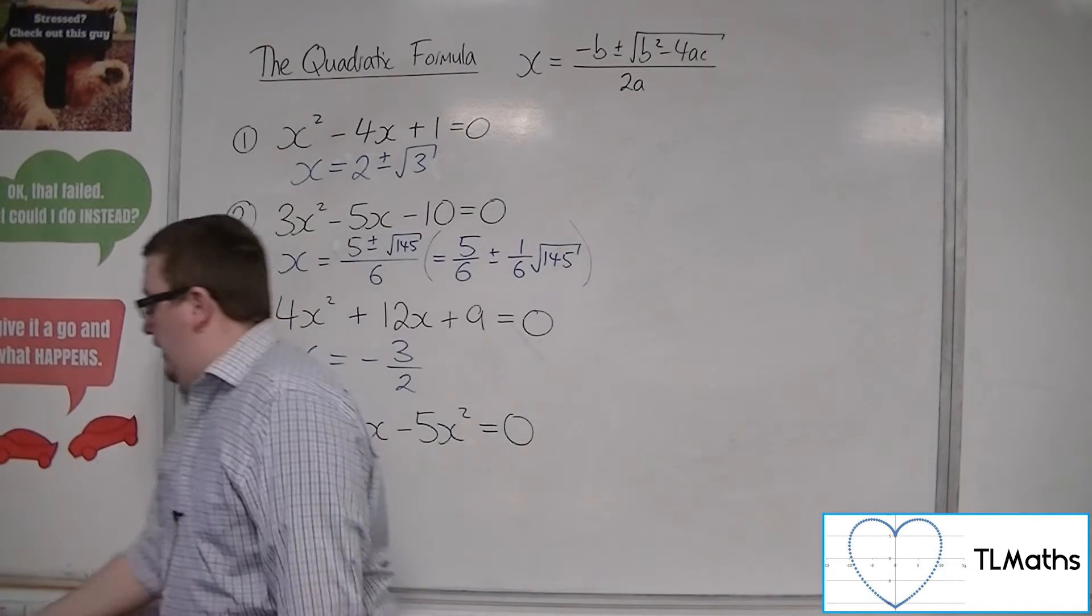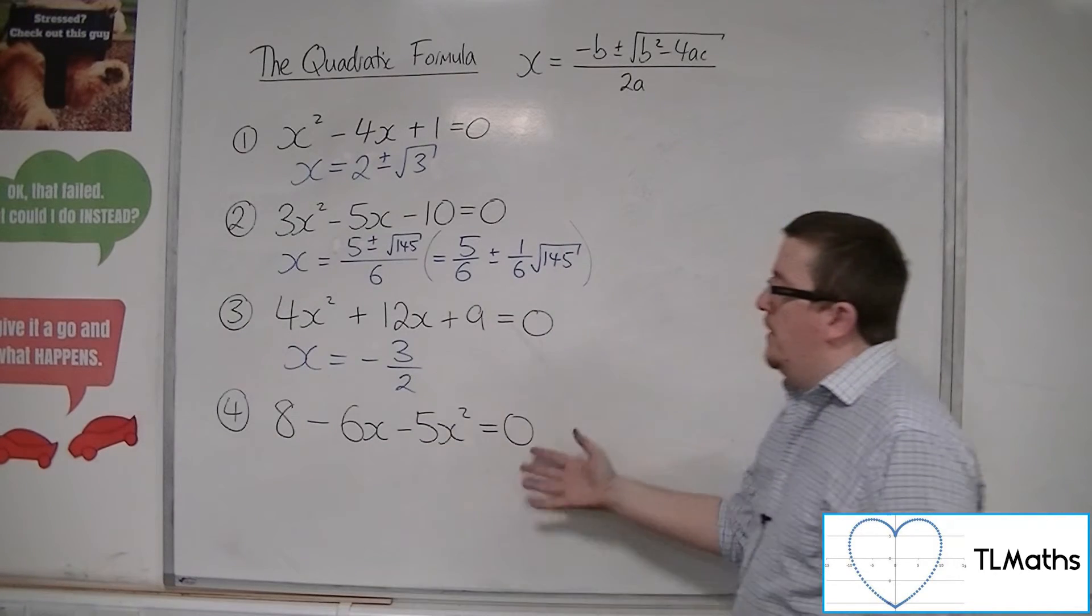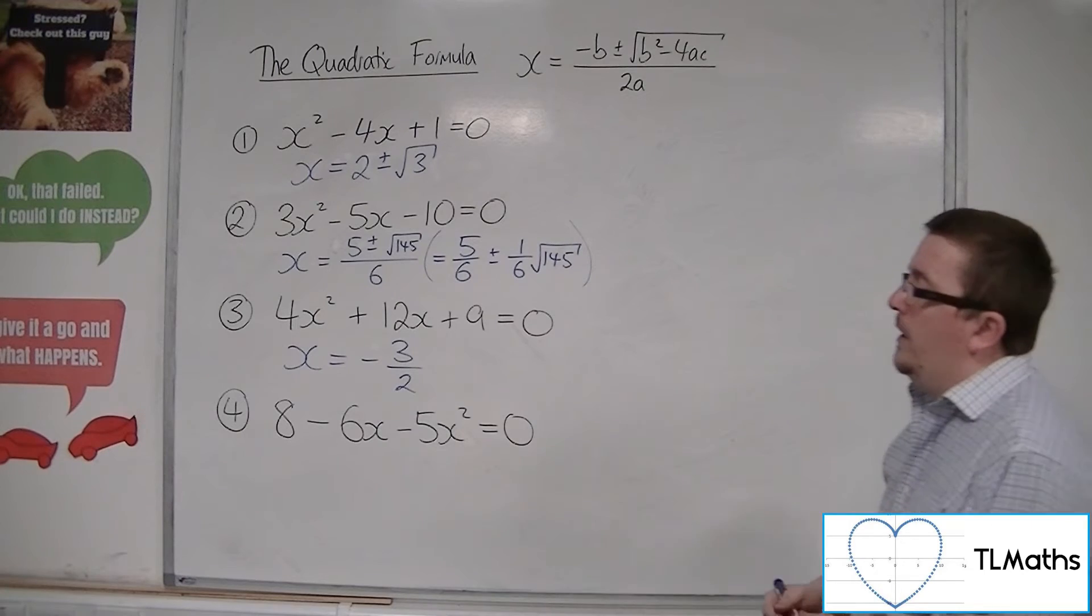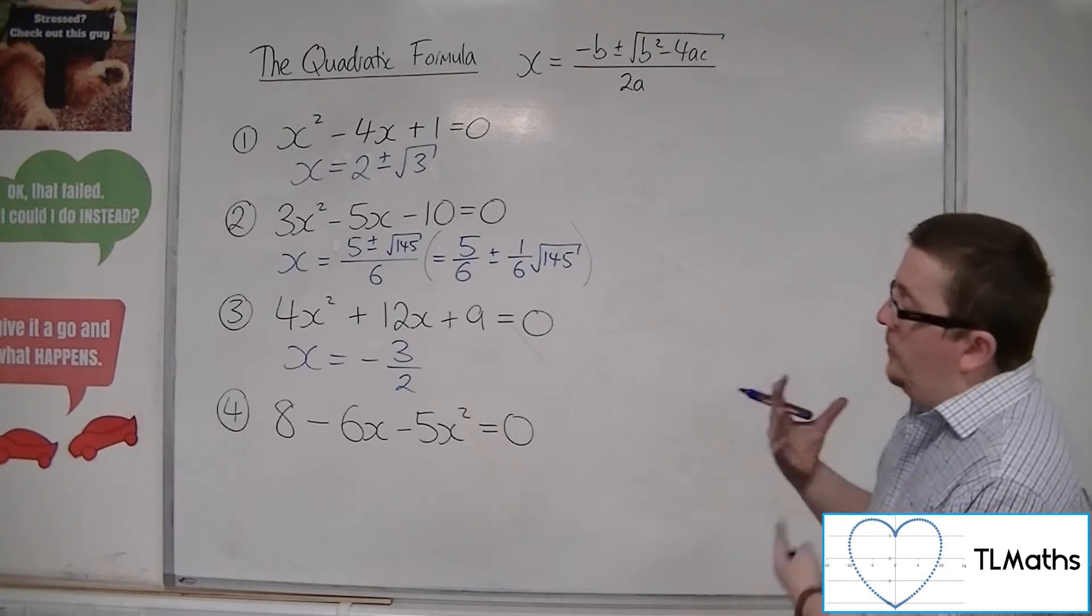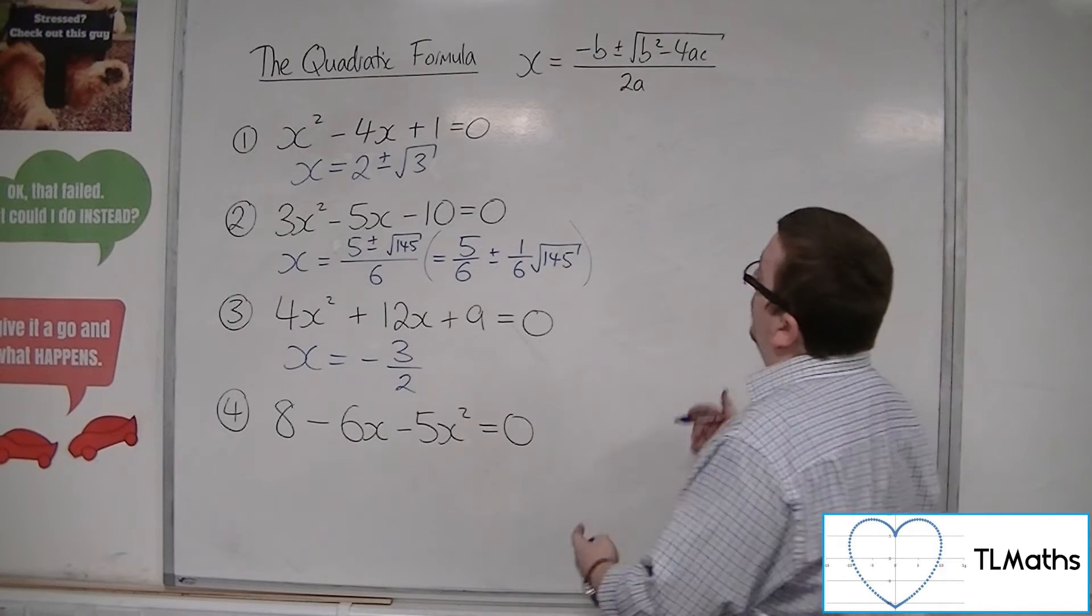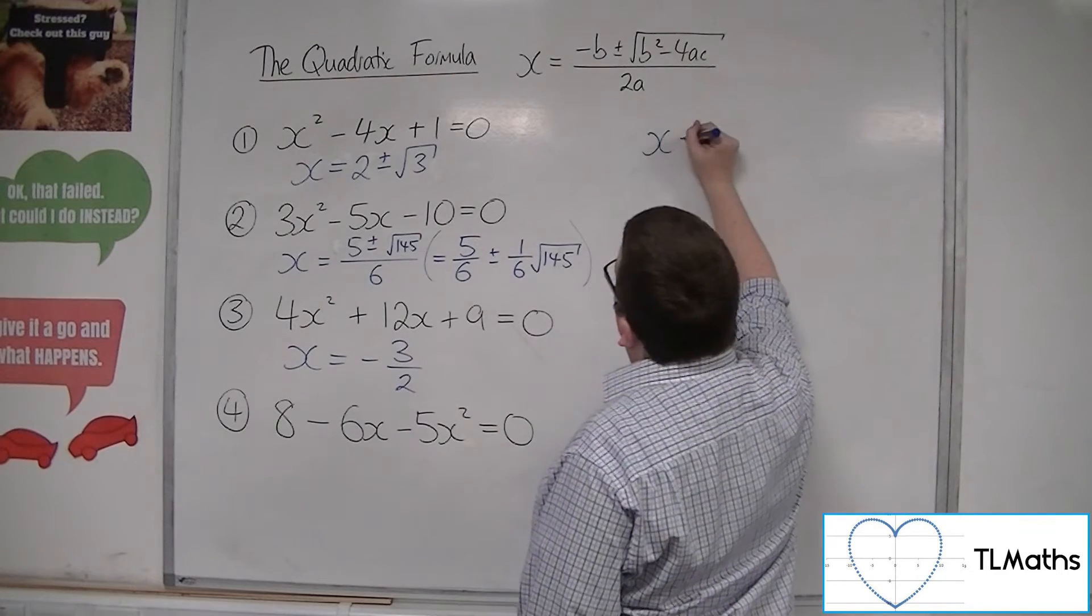So, last but not least, we have 8 minus 6x minus 5x squared. I've purposely written the terms in a different order to make it a little bit more confusing when we're substituting in, but it shouldn't cause too many problems.